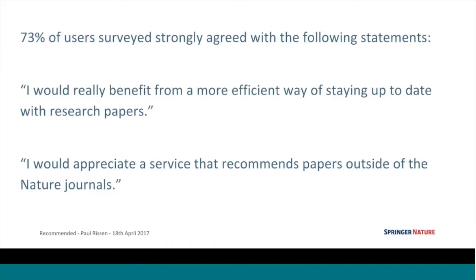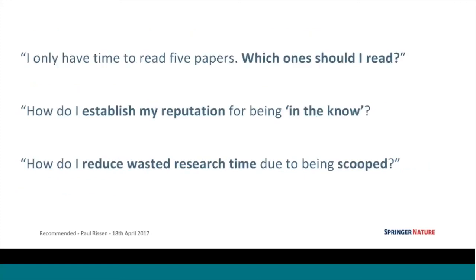We use CrossRef as our basis for recommending things. The fears and worries people expressed in our research included: I only have time to read five papers — which ones should I read? How do I establish my reputation for being in the know? How do I know what things to be aware of in terms of future funding? And how do I reduce wasted research time due to being scooped? You don't want to spend years researching something only to find that somebody else has already published ahead of you.